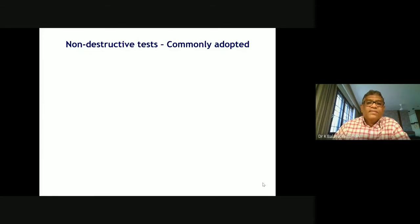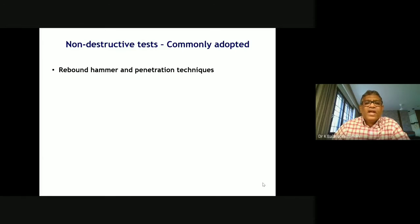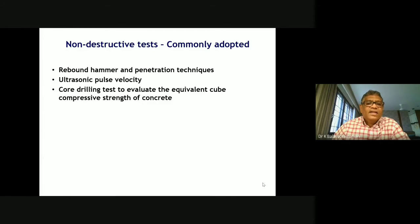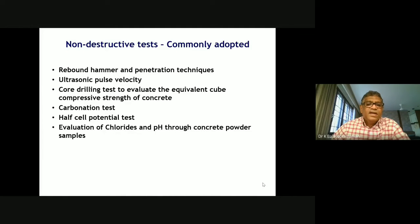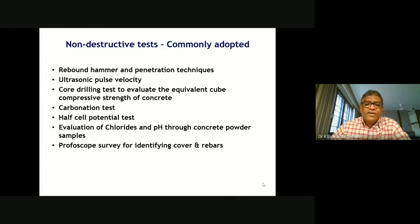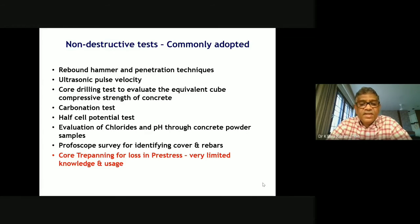The various non-destructive tests commonly adopted in our country are: first, the rebound hammer test; second, the ultrasonic pulse velocity test; then the core drilling test to evaluate the equivalent cube compressive strength of concrete. Then there are durability-based tests like carbonation test, half-cell potential test, evaluation of chlorides and pH of concrete powder samples, and resistivity test. There is also a profoscope survey for identifying cover and rebars.